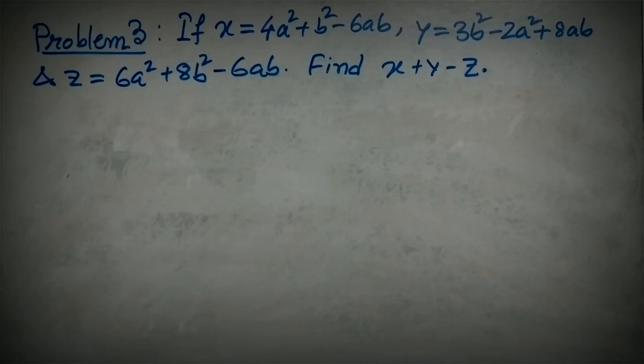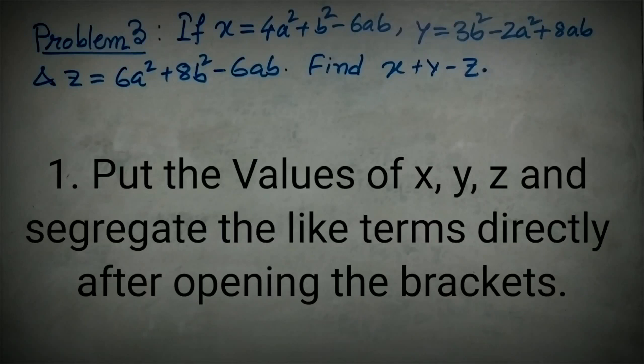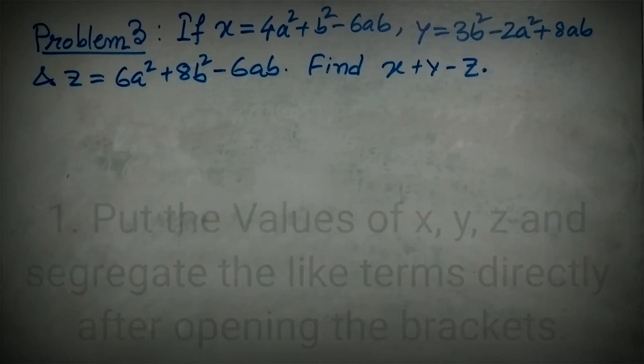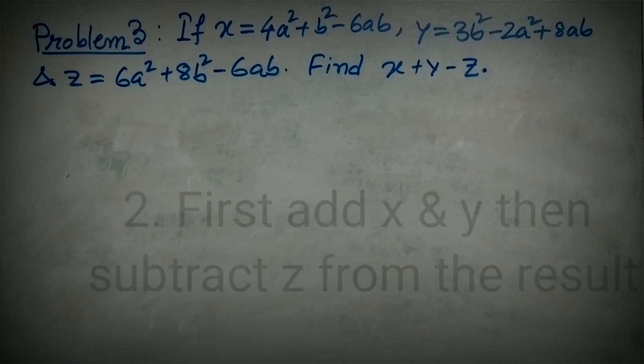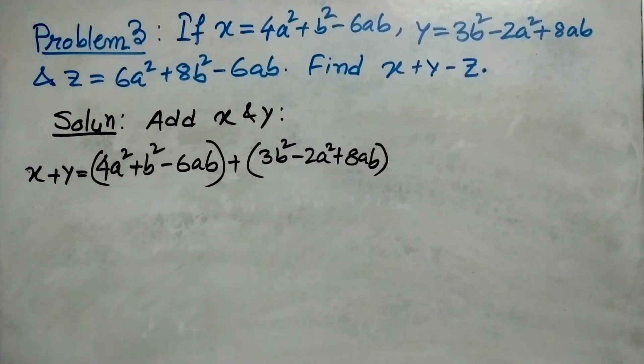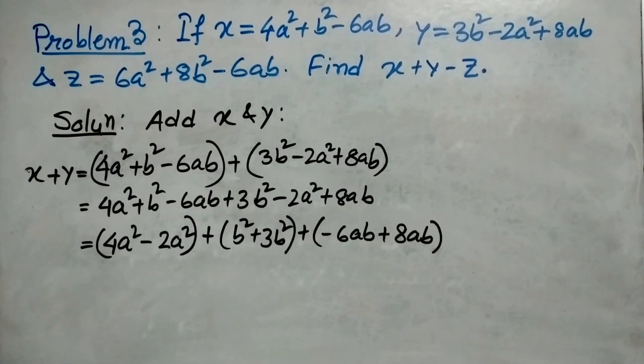You can follow two procedures: one, put all the values and segregate the like terms then solve, or first add x and y then subtract z from that result. Following the second process. Students, this is your task to use the first process and find the answer.